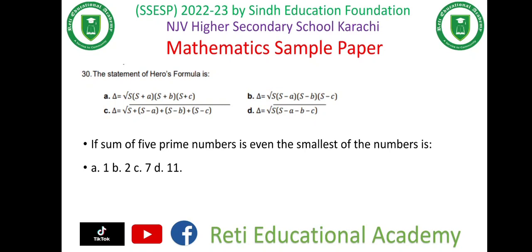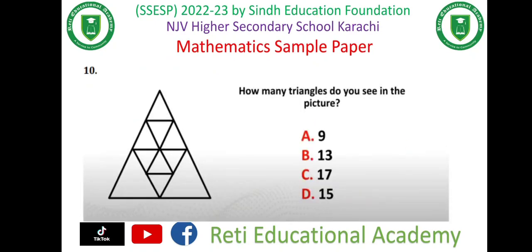If five prime numbers whose sum is even — what will the smallest number be? Simply take two, three, five, seven, eleven and add them: the sum is 28, which is even. So the smallest number is two. The answer is (b). How many triangles do you see in the picture?